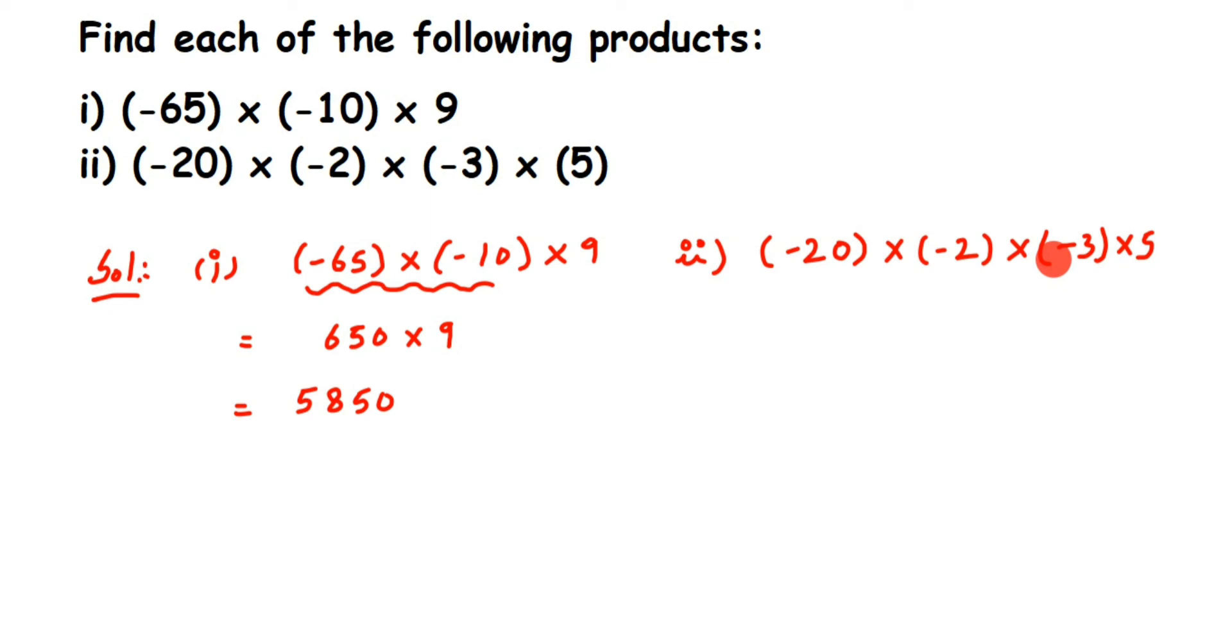So let's start solving. You can multiply all the numbers together or multiply two numbers at a time. We're going to multiply the first two numbers. So 20 into 2 is 40. Minus into minus is plus - I'm multiplying two negative numbers and two is an even number so the answer will be positive. Again I'm going to multiply the last two numbers.